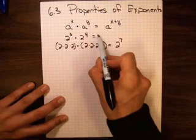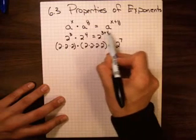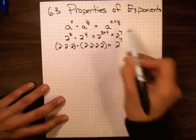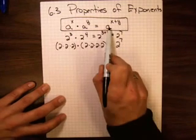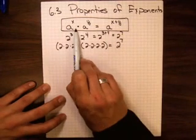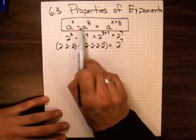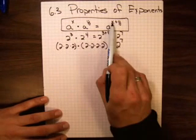Or, which is 2 to the 3 plus 4, 2 to the 7th power. So when we're multiplying exponents, or multiplying bases that have exponents, we can add the exponents.